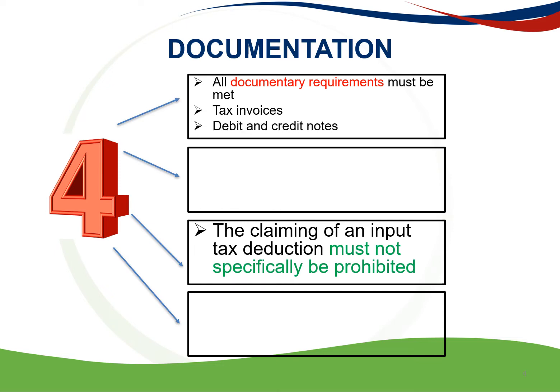The next documentary requirement is debit and credit notes. The VAT Act provides for the issue of a debit or credit note if a supply is cancelled, the nature of the supply has changed, the consideration has been altered, or the goods or services have been returned and a tax invoice was issued for the original supply. Debit and credit notes can also be issued for the correction of incorrect tax invoices. A debit note is issued if the VAT shown on the tax invoice is less than the actual VAT charged. A credit note is issued if the VAT shown on the tax invoice is more than the actual VAT charged.